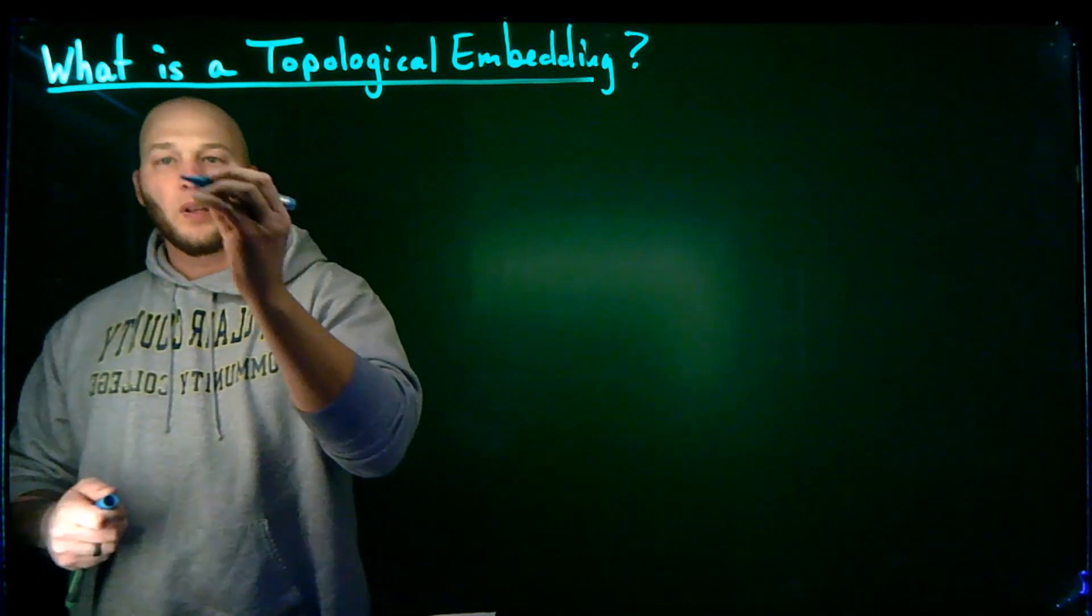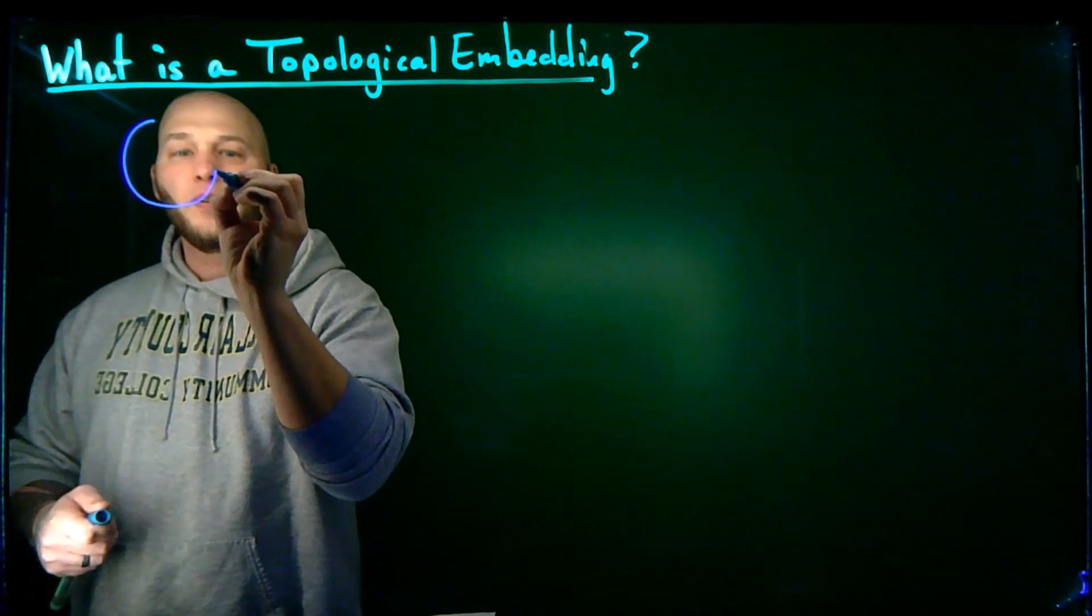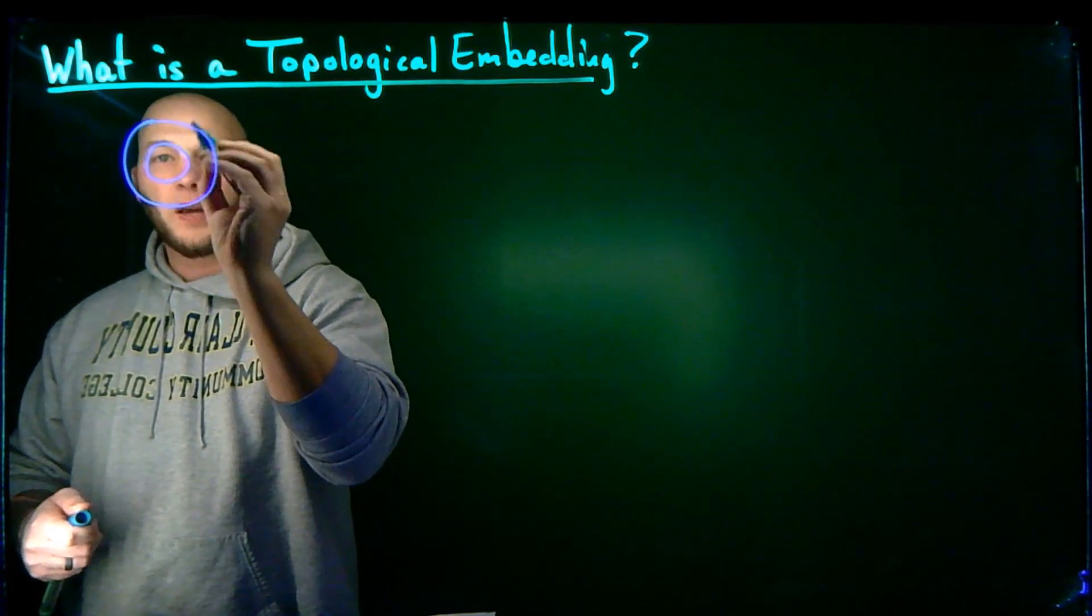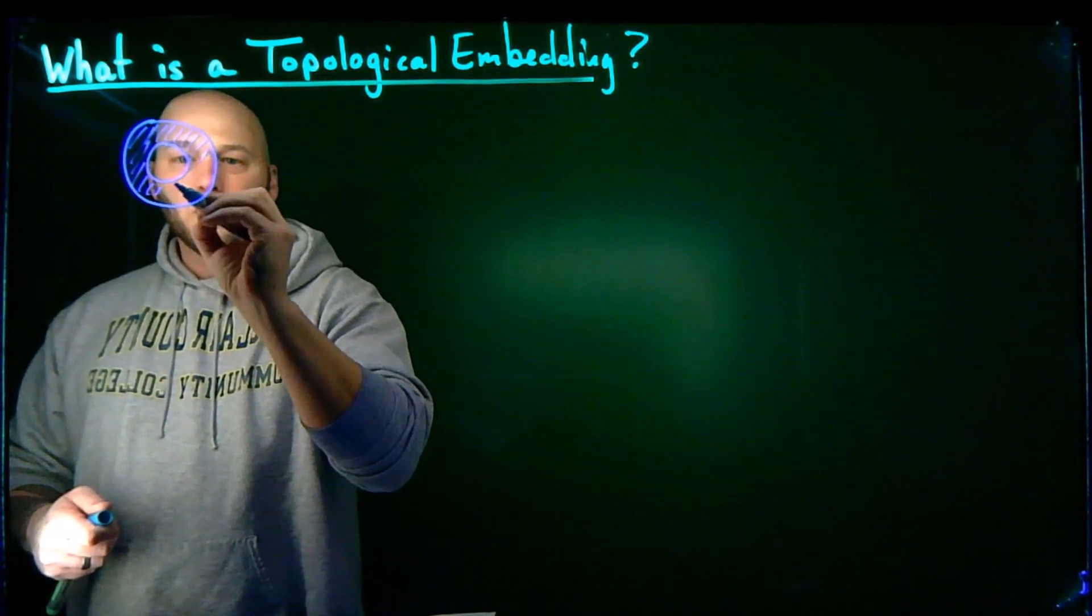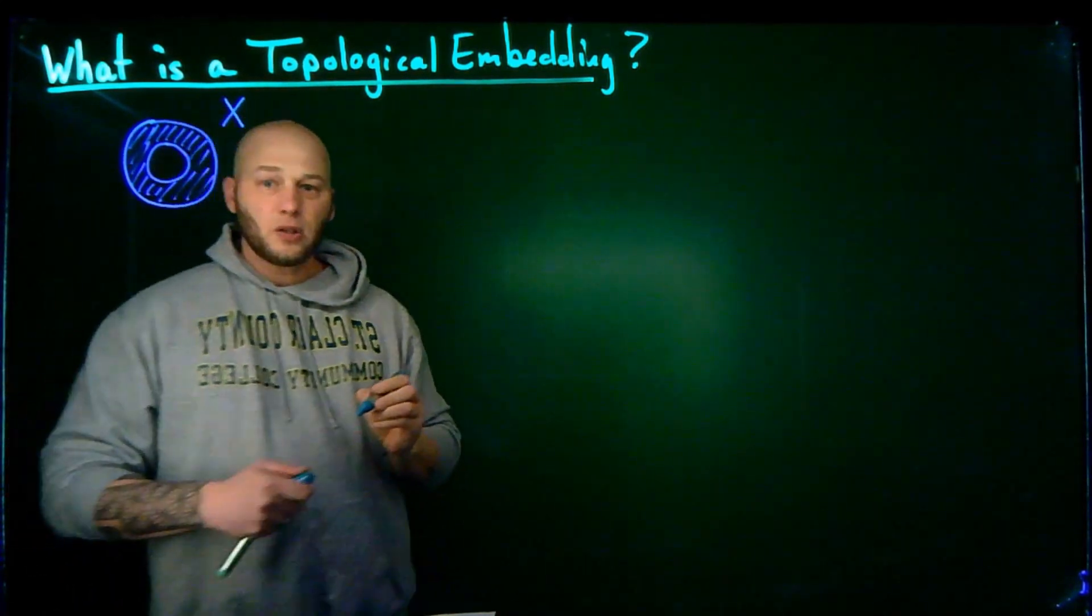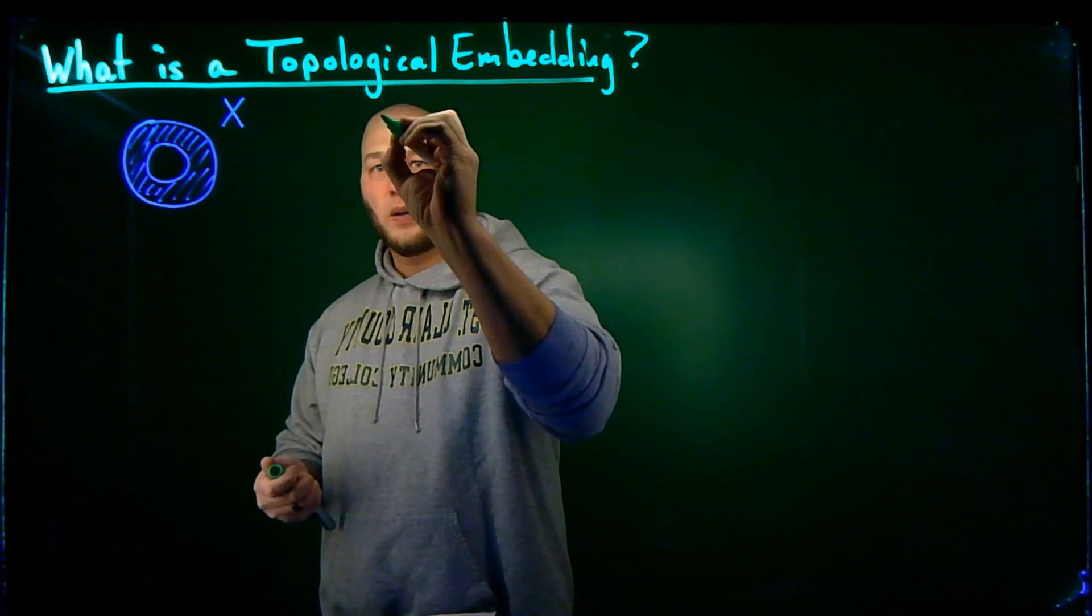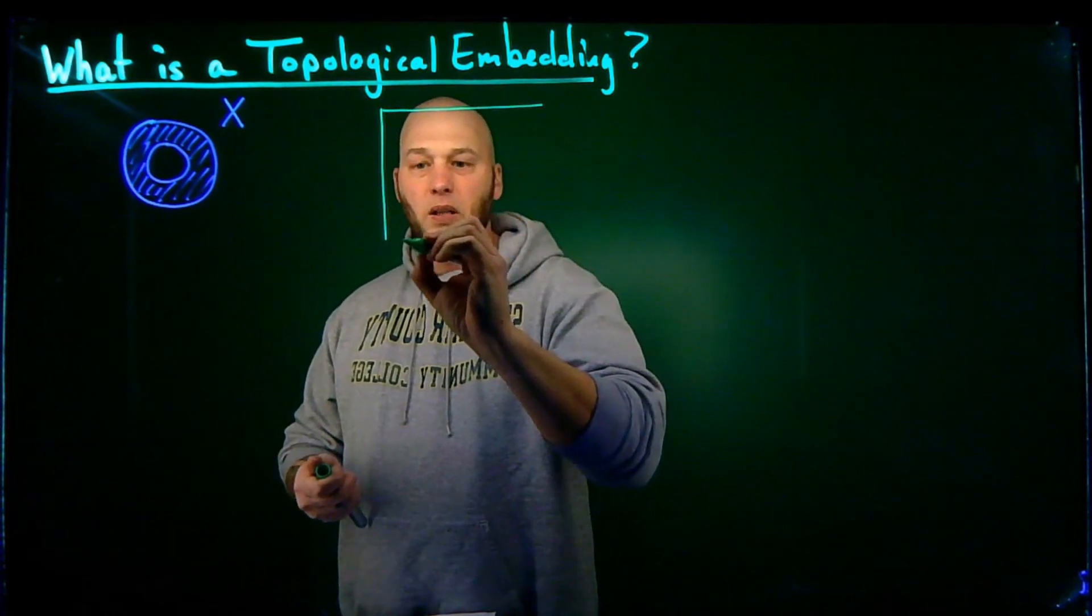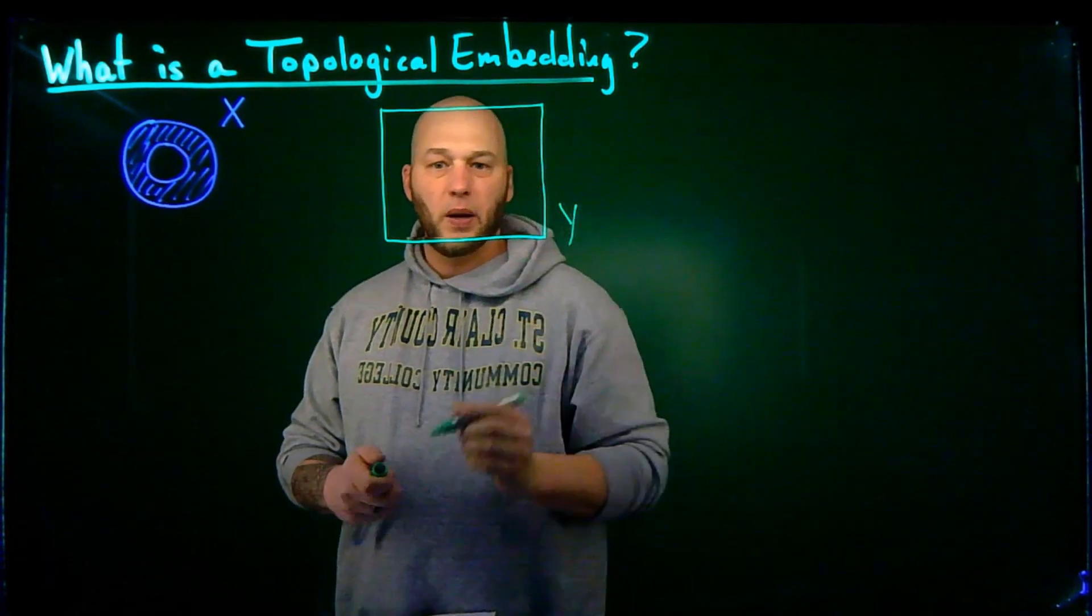But let me go ahead and give a visual for this. Let's say I have a topological space consisting of the following annulus. So my topological space consists of this region right between two circles. So this right here is going to be my topological space X. And what I'm going to do is I'm going to consider another topological space over here, and I'm just going to schematically express as a rectangle. So this is going to be my topological space Y.